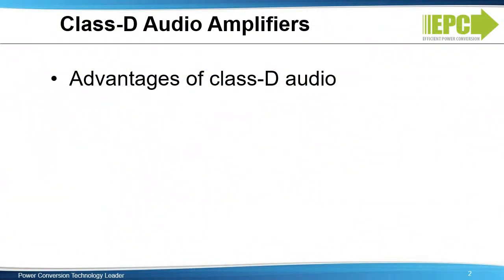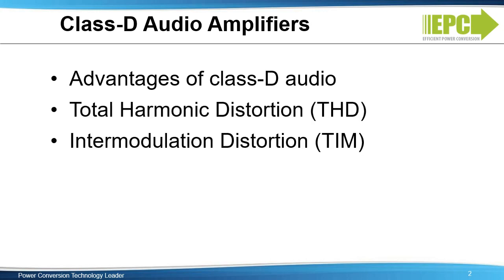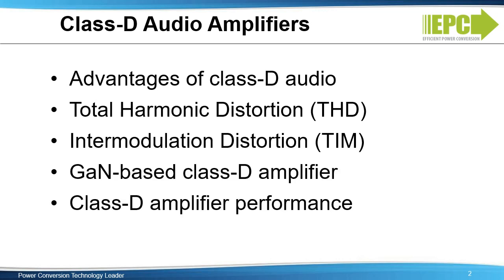First, the advantages of Class D audio will be discussed. The quality of sound reproduced by an audio amplifier, measured by critical performance parameters such as total harmonic distortion and intermodulation distortion, is influenced by the characteristics of the switching transistor used, so these parameters will be addressed. A GAN-based audio amplifier will be evaluated and the overall performance analyzed.